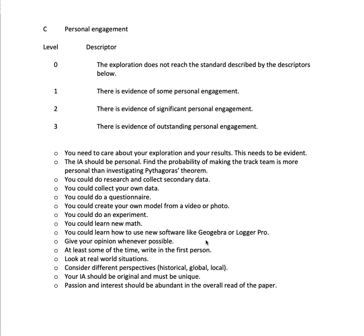Give your opinion whenever possible. I find that Criterion C and Criterion D kind of go together. It's very hard to have very bad personal engagement but very good reflection, or vice versa. Normally you have good reflection and good personal engagement, or bad reflection and bad personal engagement. A lot of that is to do with giving your opinion. If you give your opinion and talk about what's going on, it shows that you're personally engaged and reflecting at the same time. At least some of the time, write in the first person.